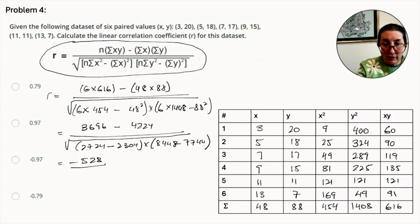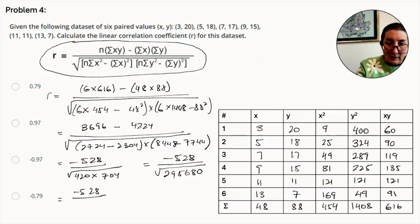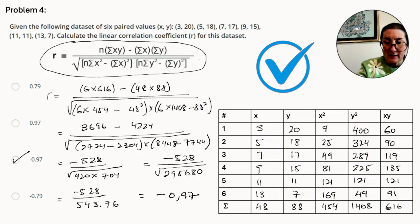Now we have negative 528 over the square root of 420 times 704. And that is equal to negative 528 over the square root of 295,680, which equals negative 528 over 543.76, which is equal to negative 0.97.